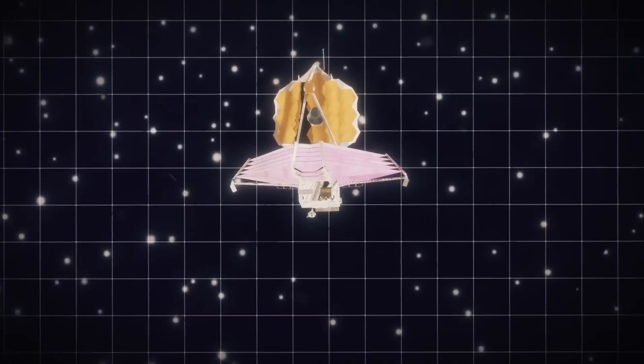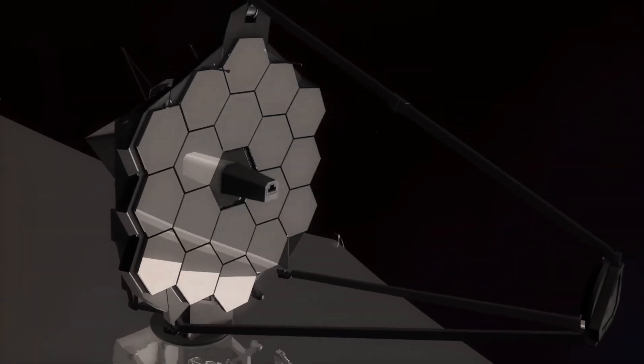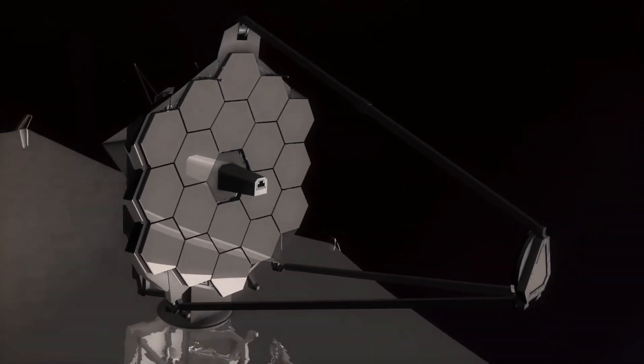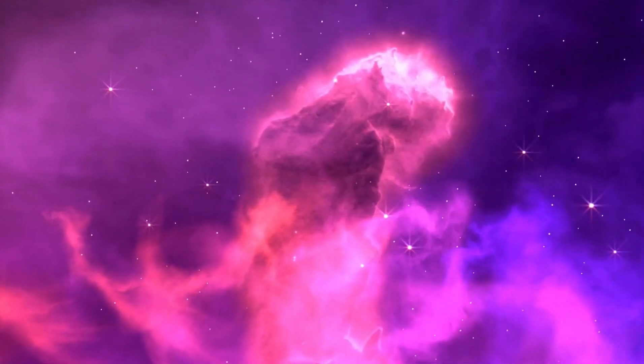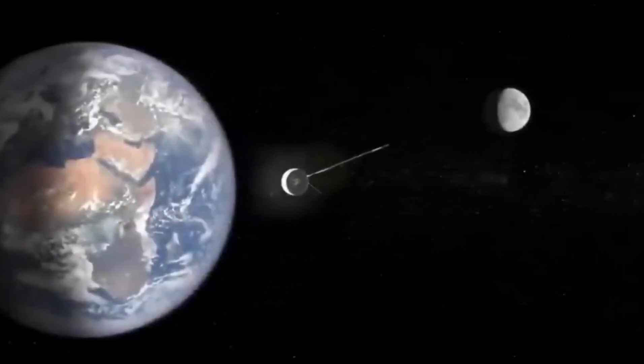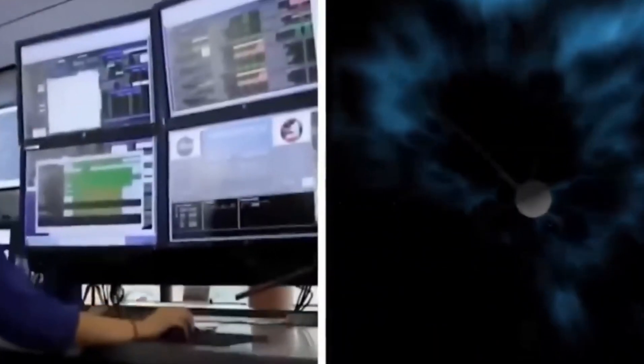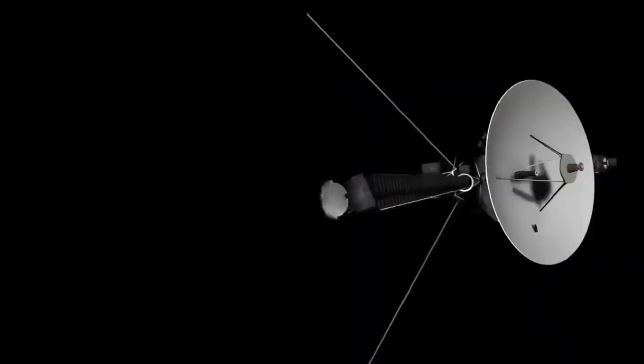When Voyager 1 passed Pioneer 10 on February 17, 1998, at a distance of 69 AU from the sun, it took the title of most distant human-made object in existence. On December 16, 2004, the scientists working on Voyager 1 stated that at 94 AU, Voyager 1 had recorded high magnetic field intensity readings, suggesting that it had hit the termination shock and was now in the heliosheath.